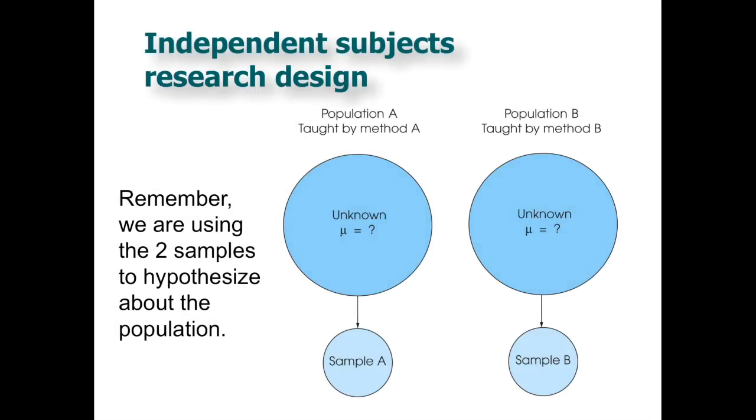So remember we're keeping in that whole idea of we're going to have a population, from that population, where they're going to pull a small sample. So right now, because it's independent t, we're going to have two different populations and two samples. So we have population A, and from that population A, you can grab sample A. And from population B, you can grab sample B.